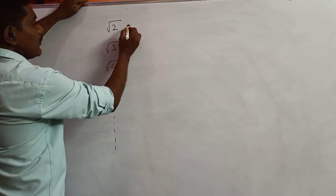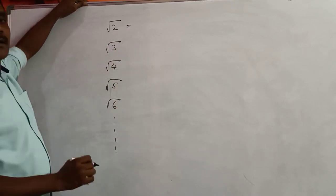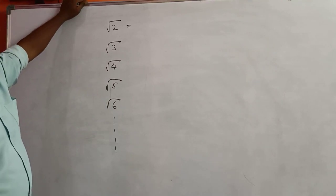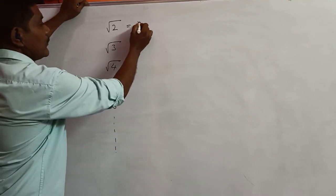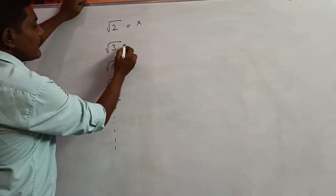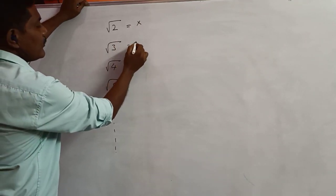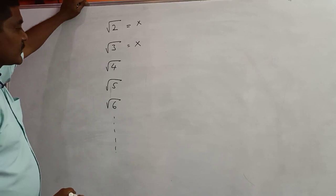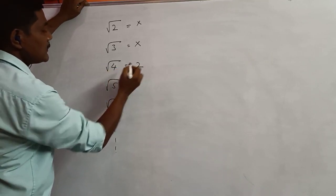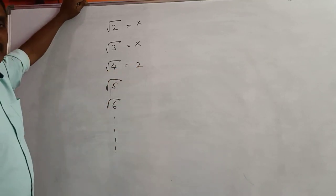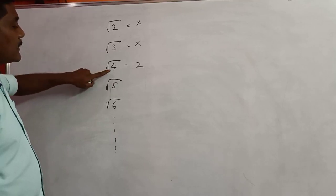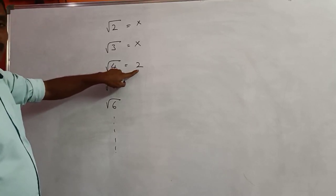Yes. The square root of 4 is equal to 2. We can write: square root of 4 is equal to 2. The square root of 5 — we don't know. Square root of 6 — we don't know. Square root of 9 is equal to 3.